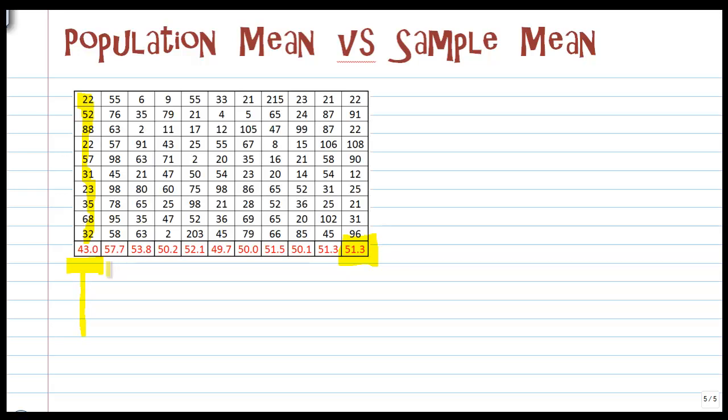So, as we go along here, I'm sampling more columns. So, this number here, the 57.7 is the first average of all the numbers in the first two columns. Notice how it's getting closer to the 51.3. Once we go to three columns, 53, and then four columns, 52, and then it starts kind of getting pretty close to that 51.3 mark.